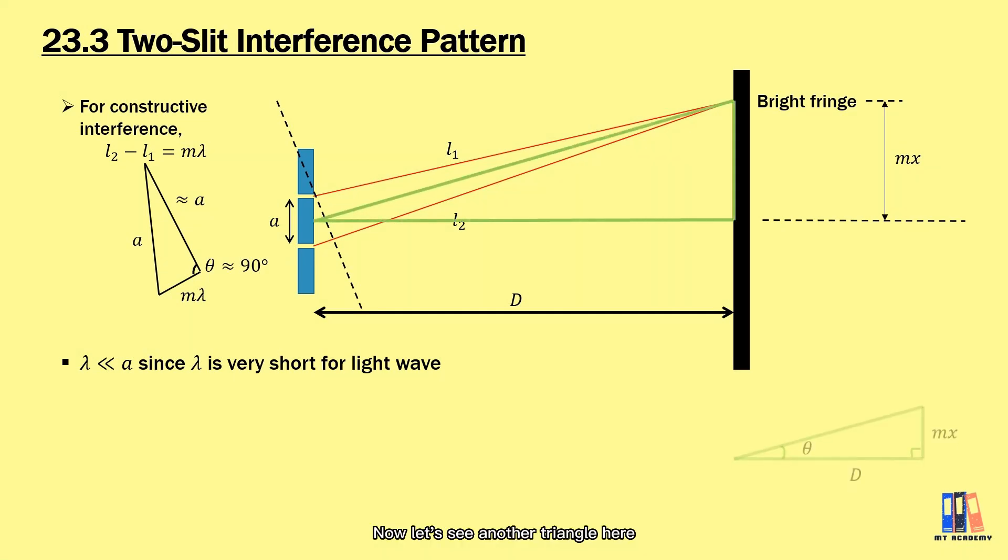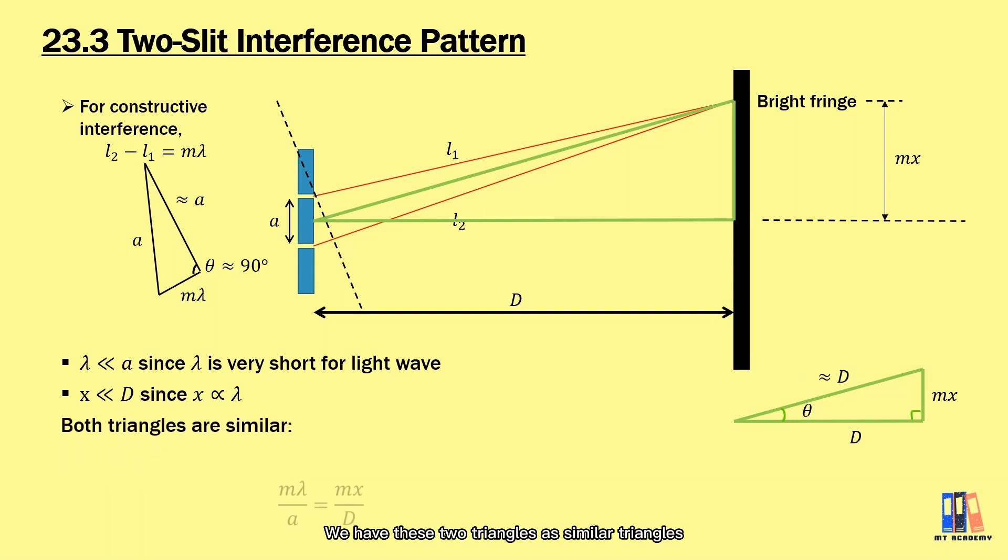Now let's see another triangle here. We have a right angle triangle with D and mx as the length and height. In actual calculation, the distance D is quite large relative to the value of x, so the hypotenuse is also approximate to the value of D. We have all the information ready. We have these two triangles as similar triangles after approximation. Comparing the ratio of length and height, we have mλ/a = mx/D. We arrange the formula. We have x = λD/a as the formula for the interference pattern.